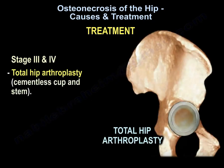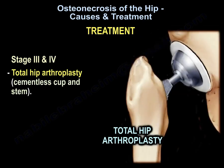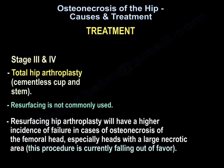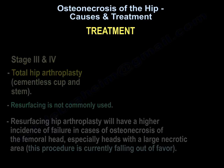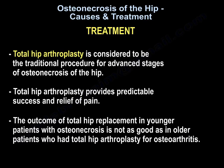For stage 3 and stage 4, total hip arthroplasty with cementless cup and stem is the treatment. Resurfacing is not commonly used and has a higher incidence of failure in cases of osteonecrosis, especially in heads with a large necrotic area, and is currently falling out of favor. Total hip arthroplasty provides predictable success and relief of pain, though outcomes in younger patients with osteonecrosis are not as good as older patients with osteoarthritis.